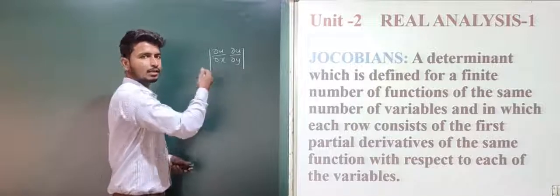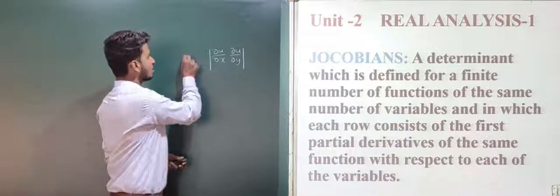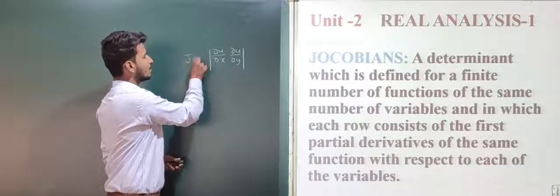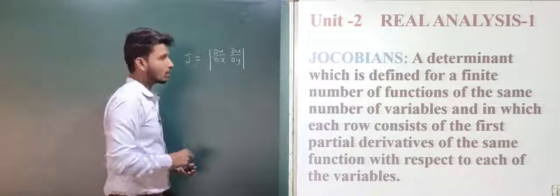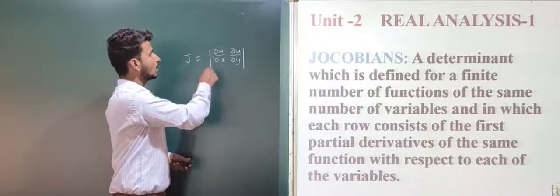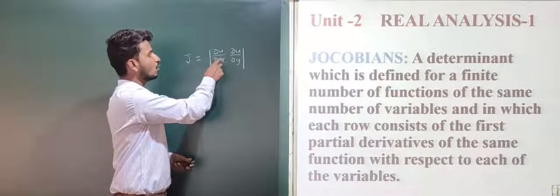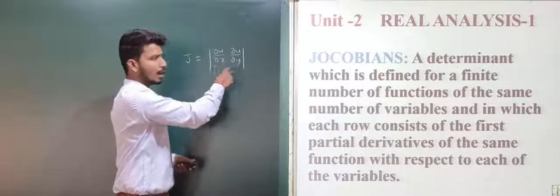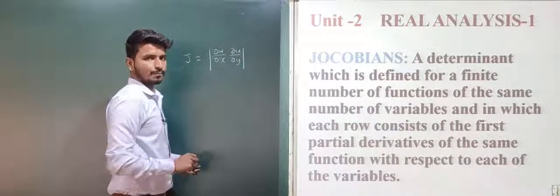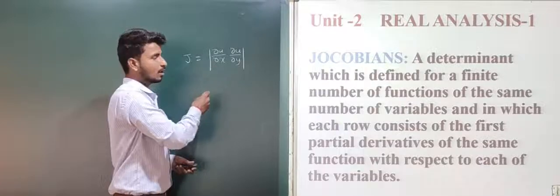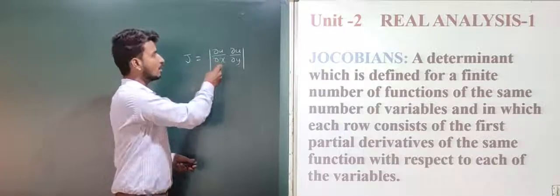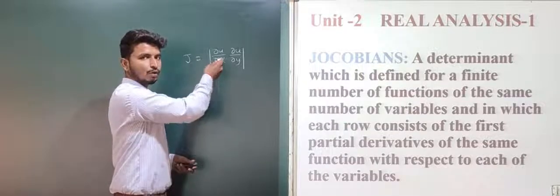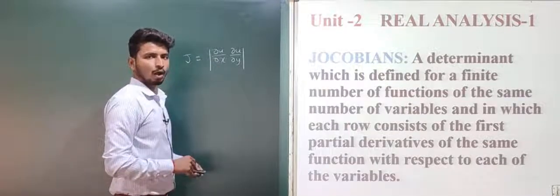We can denote this as J, capital J, Jacobian equal to the determinant of ∂u/∂x and ∂u/∂y. This is the Jacobian of order one.